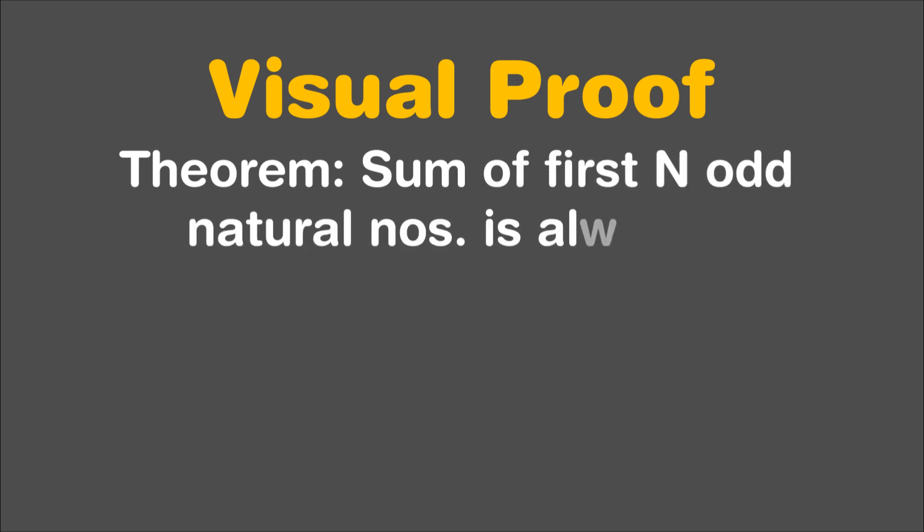The theorem states that the sum of the first n odd natural numbers is always a perfect square and is equal to n square.